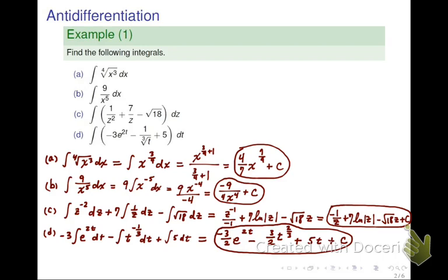Now, if we proceed and integrate each term by using the rules, the first one, remember the rule for exponential function - the integral of e to the kx is 1 over k times e to the kx. Using that rule, we get negative 3 divided by 2 times e to the 2t. For the second part, it's simply the power rule. We add 1 to the power. So negative 1 third plus 1 is positive 2 thirds. Then you divide by 2 thirds, which is equivalent to multiplying by 3 halves. The third part is just 5t. All together, you're going to add plus C at the end to conclude.